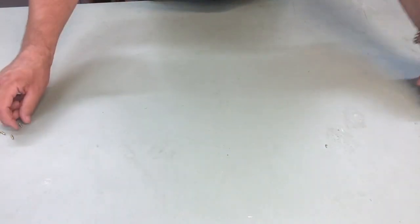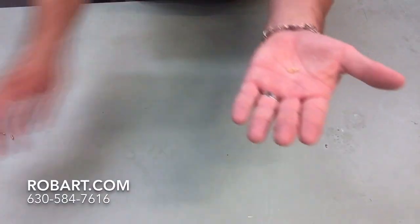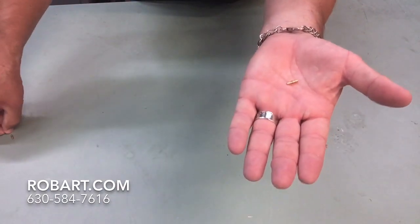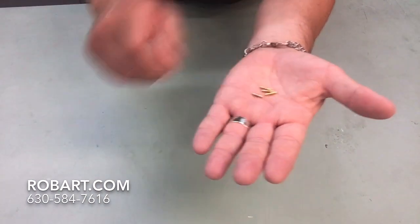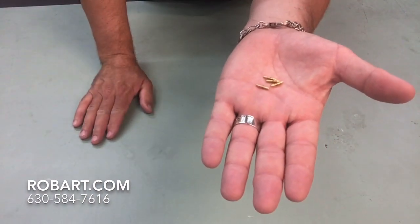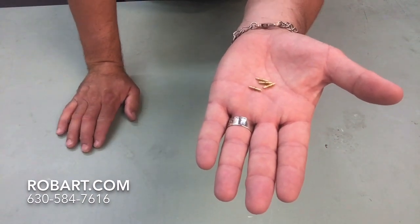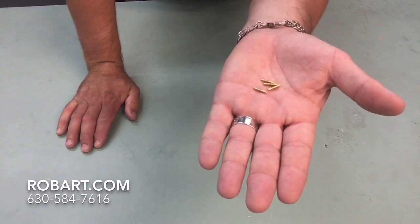If you've got any further questions on part number 189, which is four airline restrictors from Robart, give us a call at 630-584-7616.